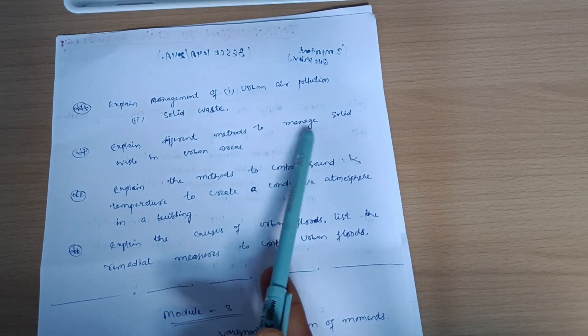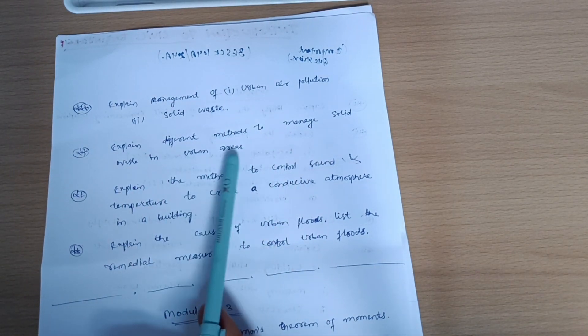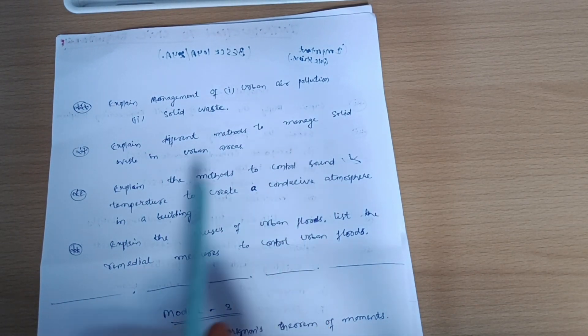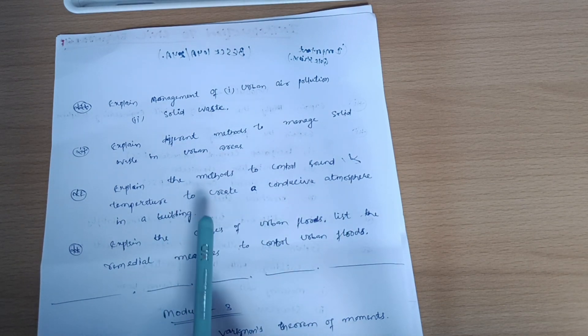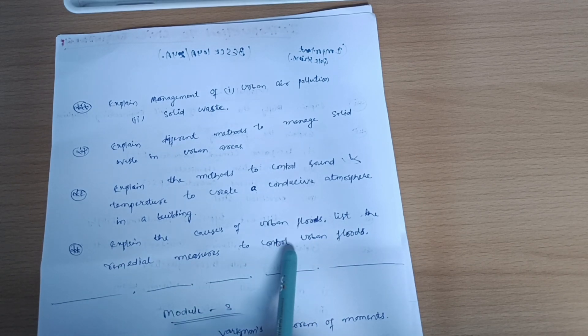Explain different methods to manage solid waste in urban areas. Explain the methods to control sound and temperature to create a conducive atmosphere in a building. Explain the causes of urban floods and list the remedial measures to control urban flood.